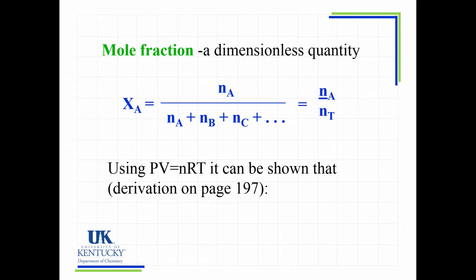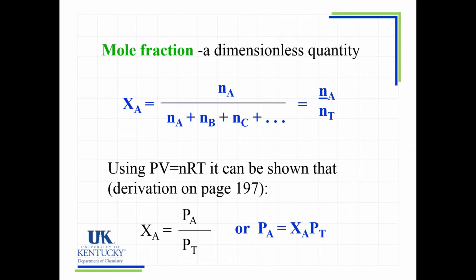If we use PV = nRT - and this derivation is shown in your textbook - for a fixed volume container, we can show that the ratio of moles and the ratio of pressures are equivalent. So the mole fraction equals pressure of A over pressure total, which equals moles of A over moles total. Rearranging, the pressure of gas A equals the mole fraction of A times the total pressure. That formula in blue is what we'll use a lot to find a partial pressure.